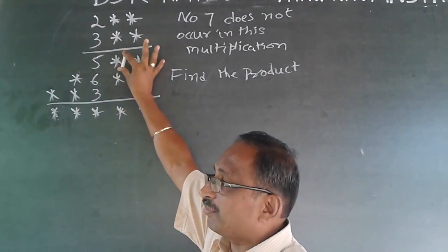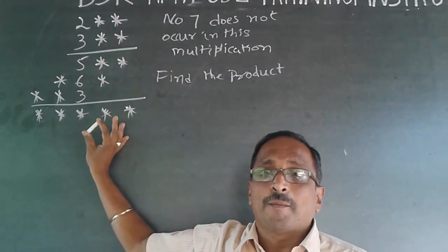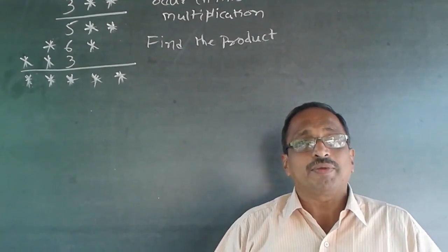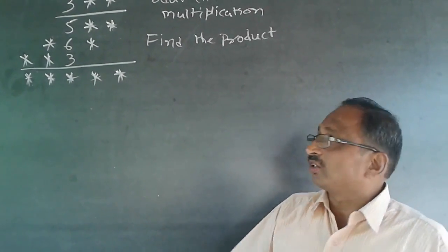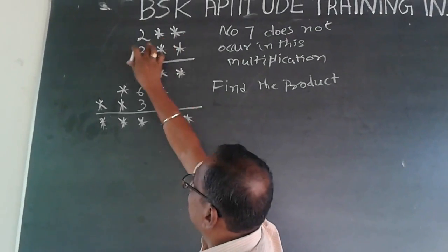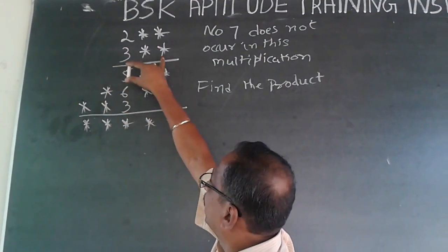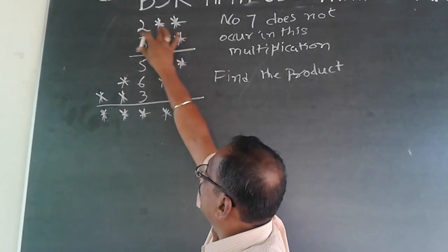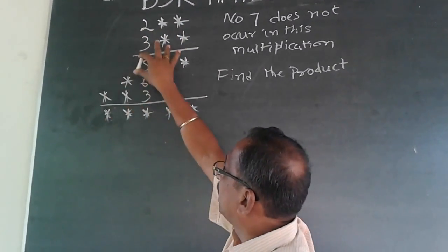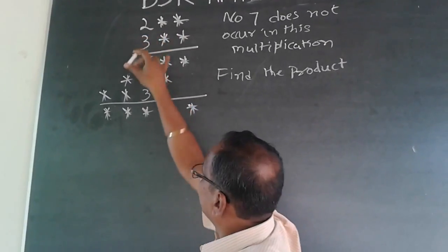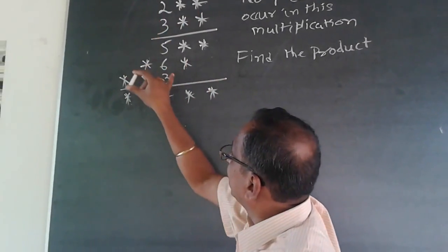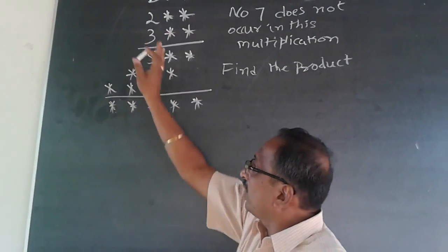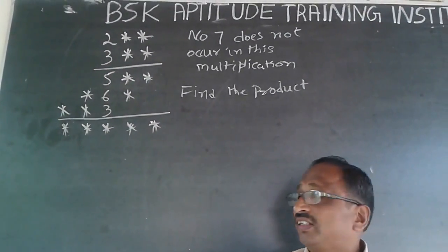Those days the numbers were given, but here the numbers are not there. However, the rules of multiplication remain the same. When I multiply this number into this number, I get the first line. The center number into the top number gives the second line. Similarly, 3 into this gives the third line. Only with these rules you will have to find out the answer.